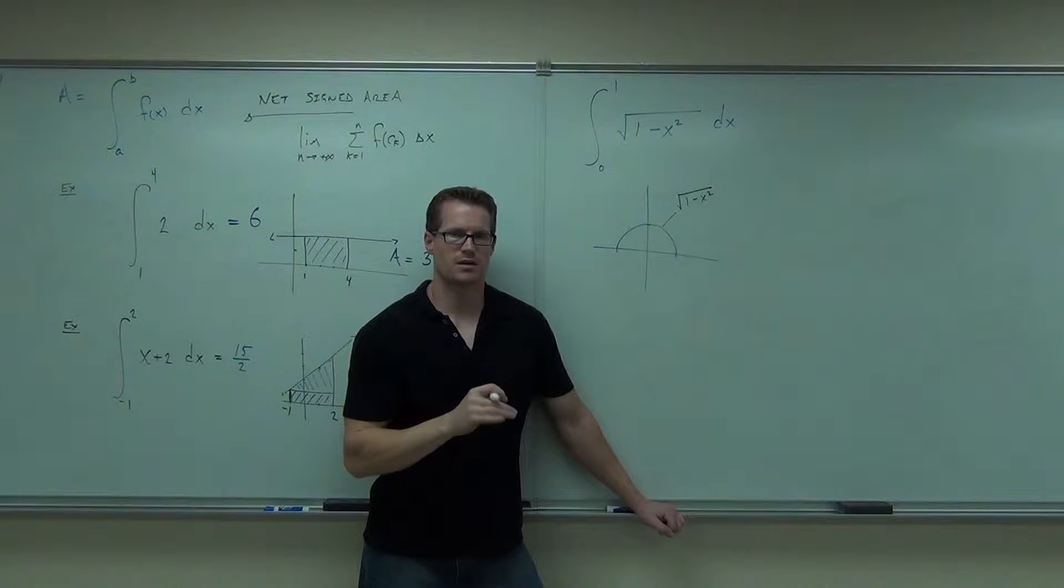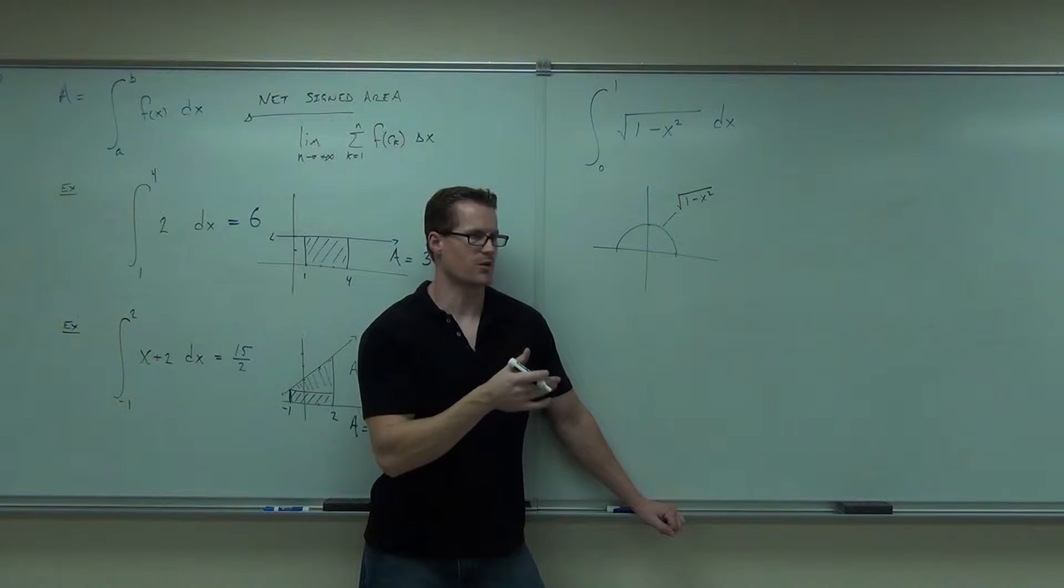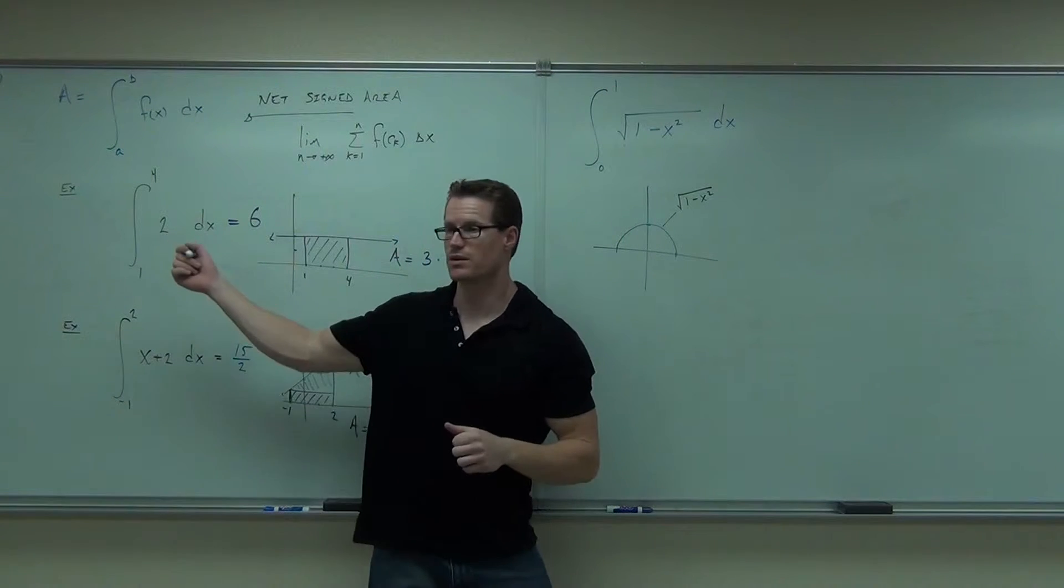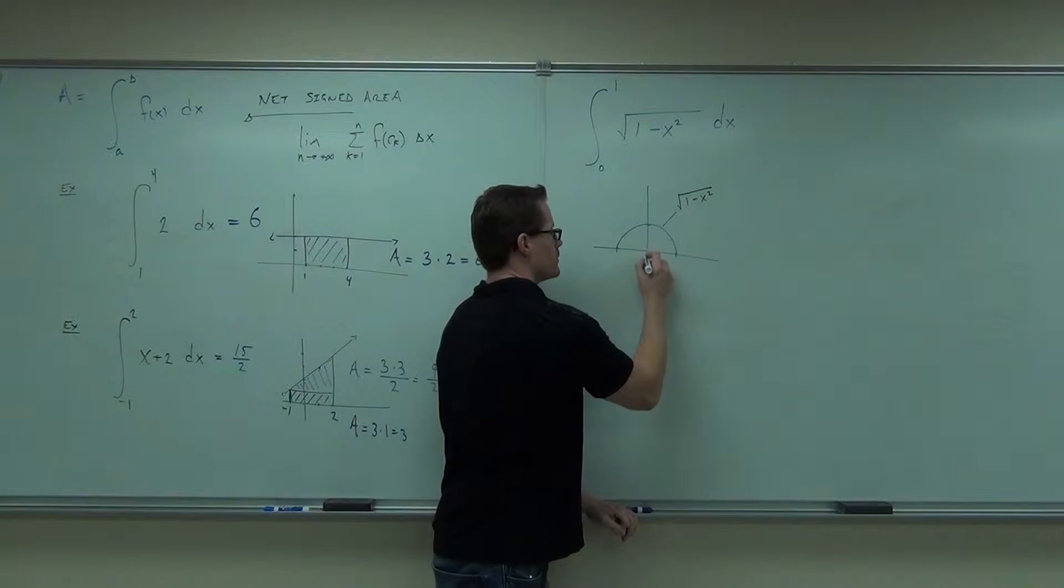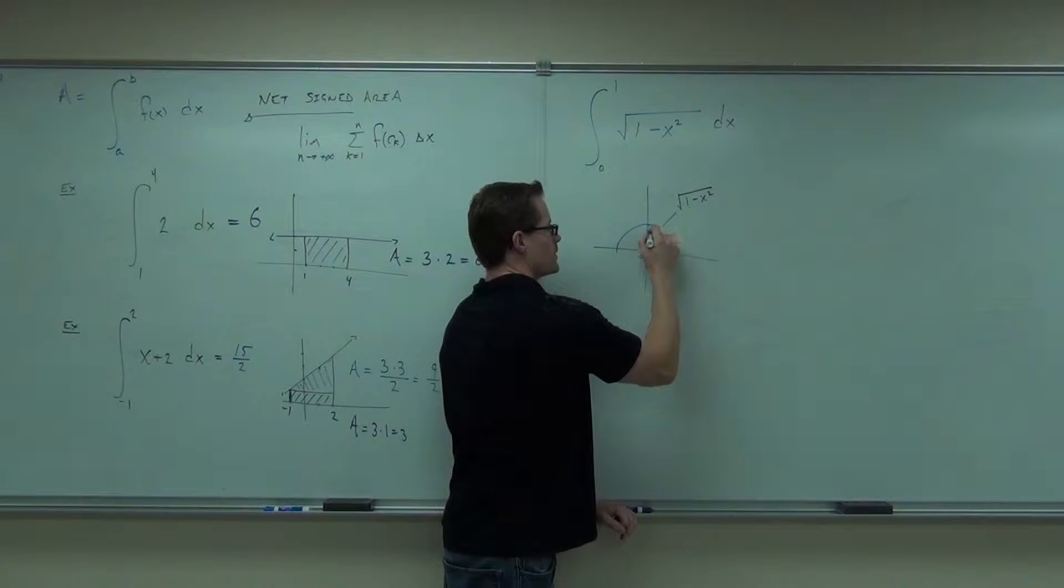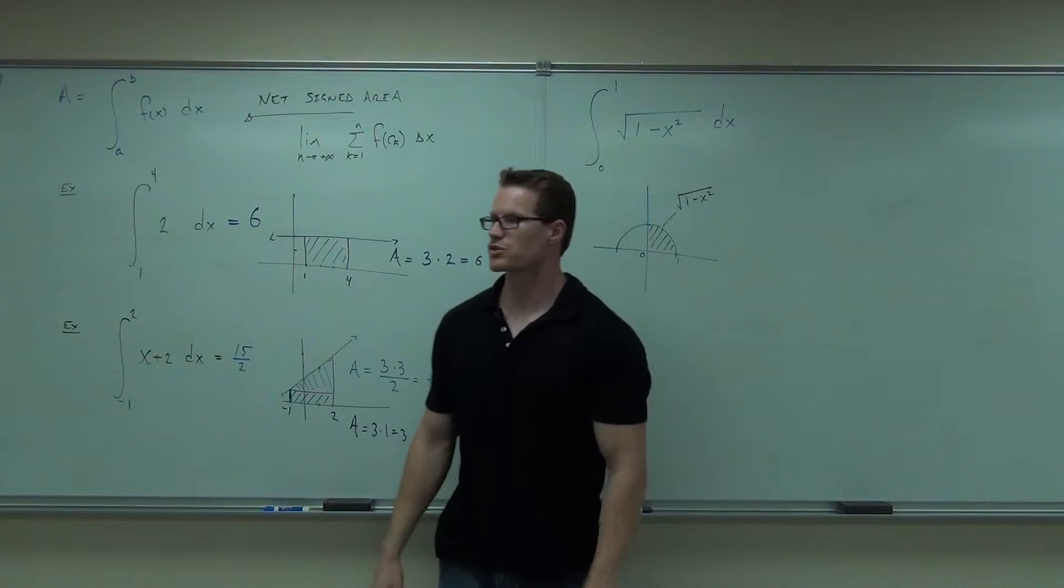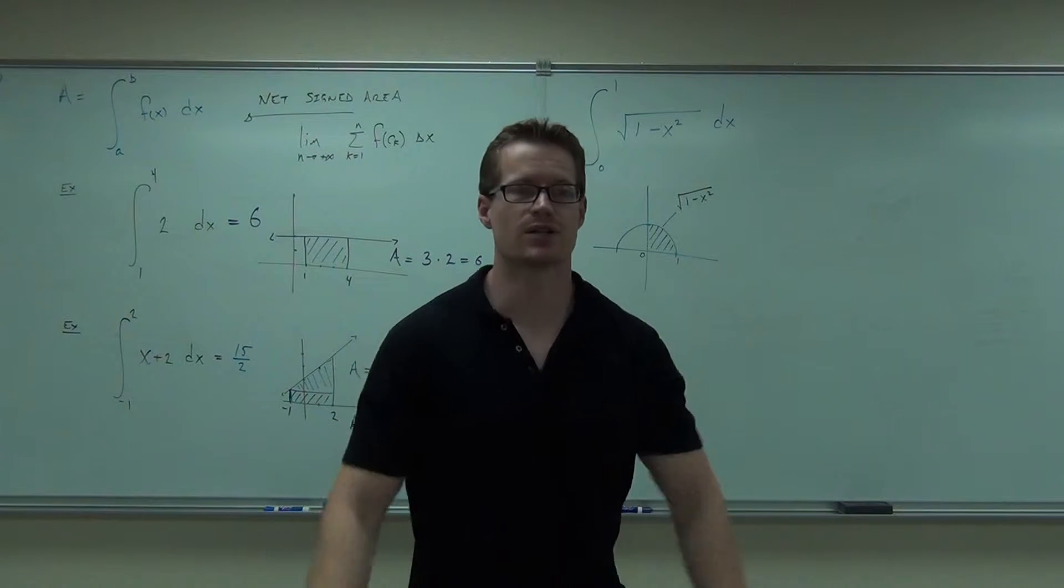My integral doesn't always say start where my function starts and end where my function ends. This actually says start here and there, just like we did over here. Start here and here. So basically, we have a quarter of a circle. We have a quarter of a circle with what type of a radius? How much is the radius here?